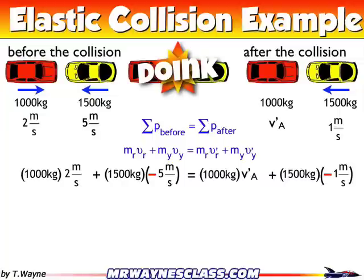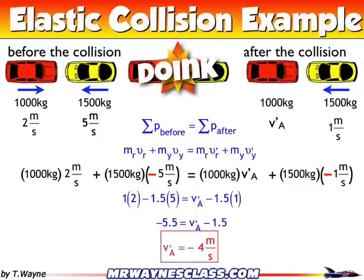Now there's a little math trick I can do. I see I've got basically three zeros everywhere except the 1,500, so I can divide everything by 1,000. That gives me 1 times 2, plus 1.5 times negative 5 — pulling the negative sign out in front — equals 1 times V-prime-A, minus 1.5 times 1. After a little bit of math, I get that V-A-prime equals negative 4 meters per second.